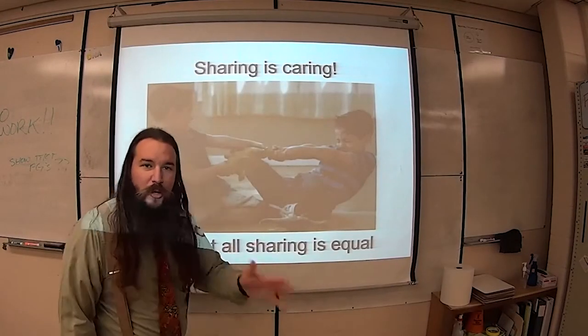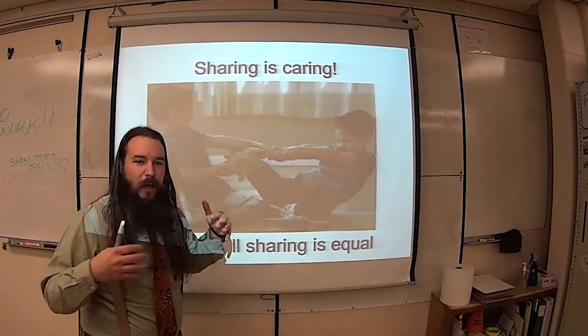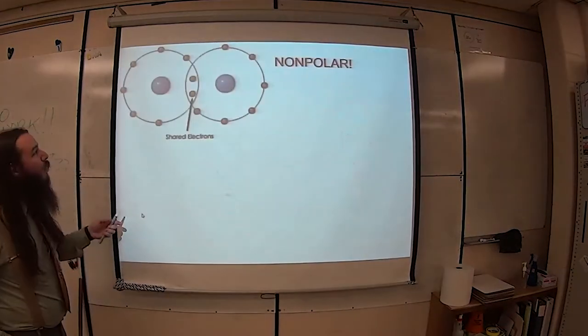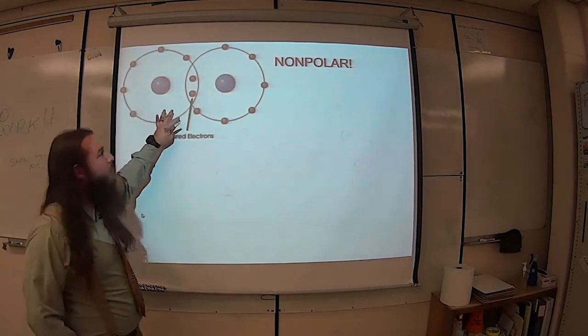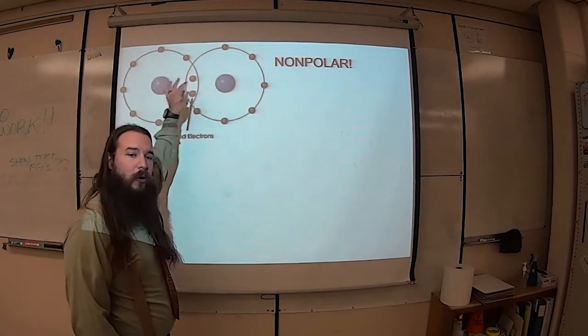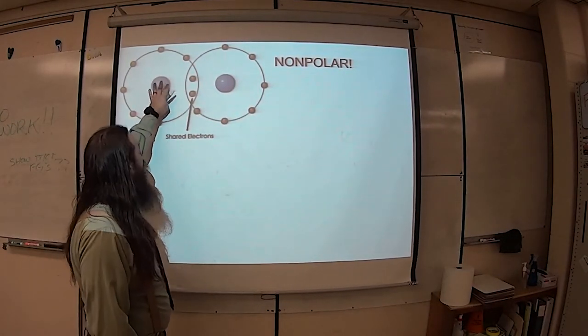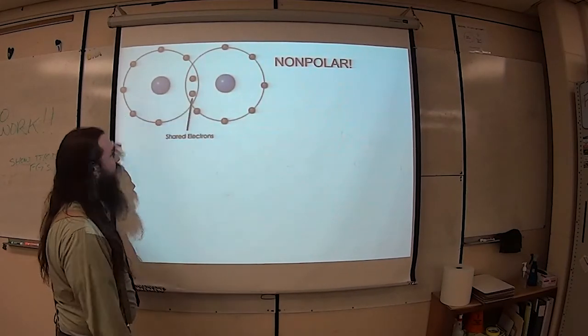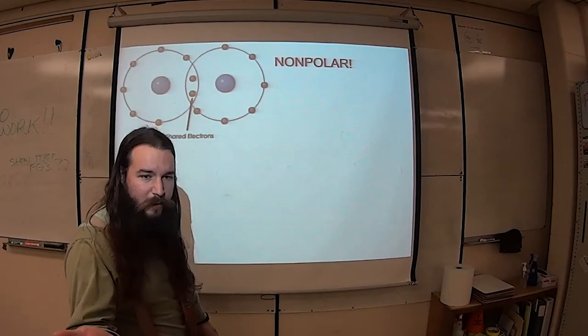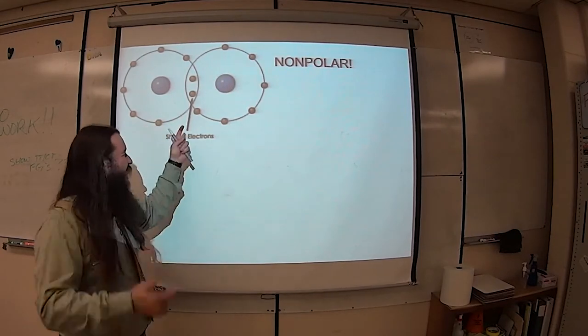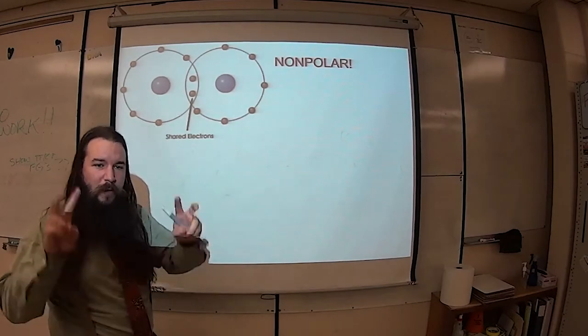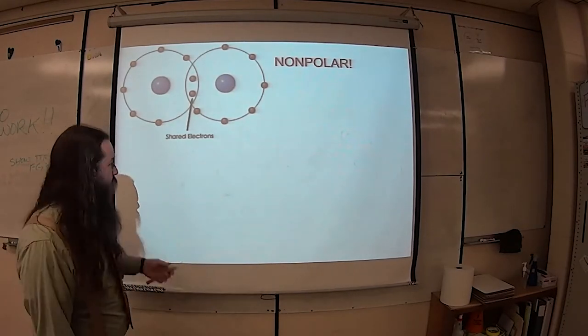When we do not have equal sharing then the electrons are not being in the same place always at the same time. When this sharing is equal we call this a non-polar covalent bond. You'll notice both these atoms look like they've got the same size nucleus, they both have the same number of electrons, so we assume this is two of the same elements. They're sharing equally, right, no one's gonna win the fight.